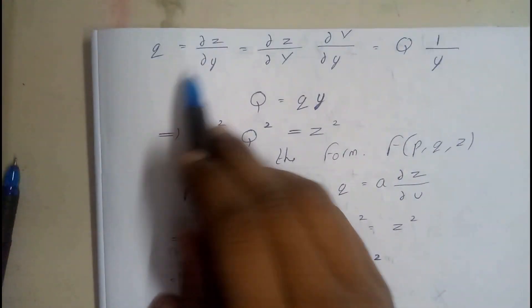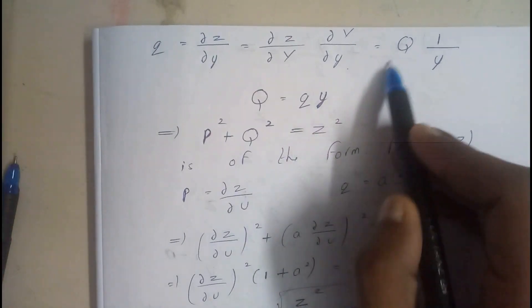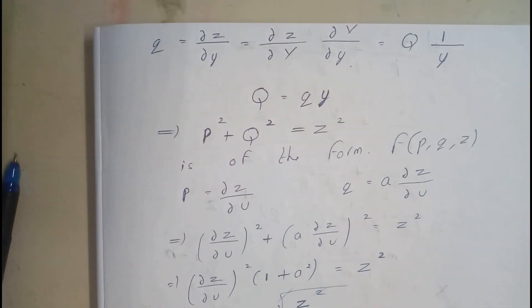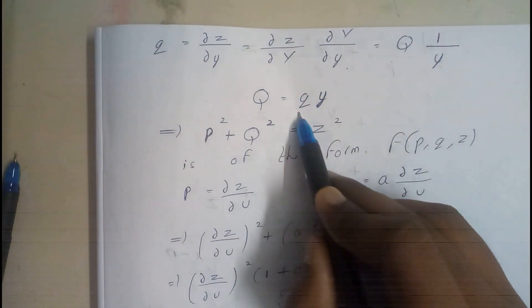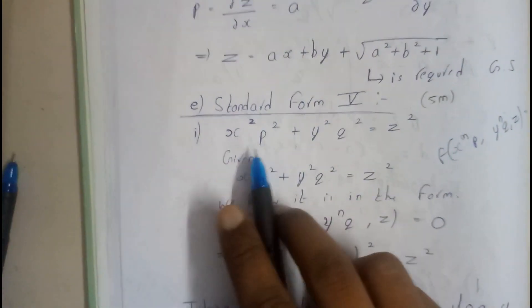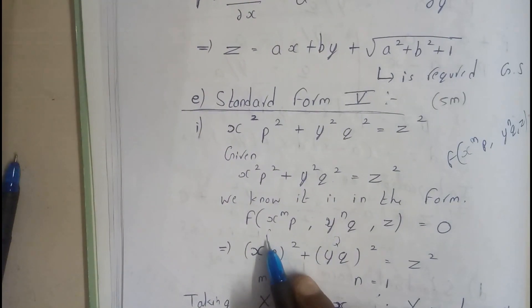Similarly for q: q = ∂z/∂y = ∂z/∂Y · ∂Y/∂y = capital Q · (1/y), so capital Q equals q · y. Now substituting these values — xp is capital P and yq is capital Q — the equation is now in terms of capital P, capital Q, and z.